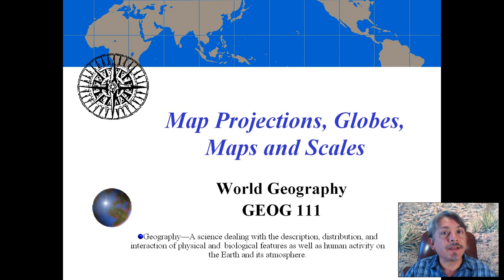This is a continuation of a prior lesson in which we found out that the Earth is actually something called a geoid — not a sphere, and not perfectly roundish either, but a geoid. We also discussed latitude and longitude.